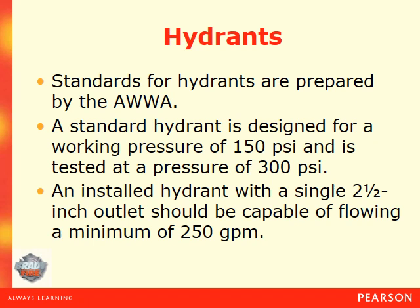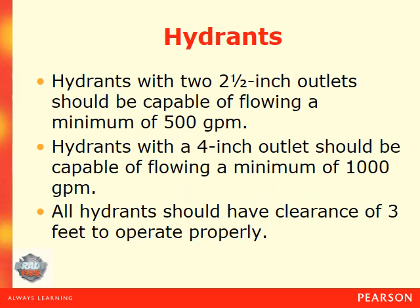Standards for hydrants are prepared by the AWWA. A standard hydrant is designed for a working pressure of 150 PSI and is tested at a pressure of 300 PSI. An installed hydrant with a single 2.5-inch outlet should be capable of flowing at a minimum of 250 gallons per minute. Hydrants with two 2.5-inch outlets should be capable of flowing 500 gallons per minute, and hydrants with a four-inch outlet should be capable of flowing a minimum of 1,000 gallons per minute. All hydrants should have clearance of three feet to operate properly in all directions.